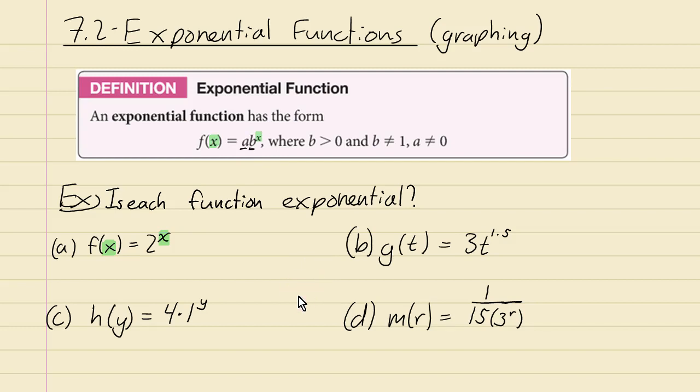To do that, we need to figure out, we can see that the b looks like it's two, the base of the exponent, also known as the growth factor. But what is a? Well, you could just write it as one times two to the x. So because I can write this as one times two to the x, you've got your a is one and your b is two. So yes, that works.